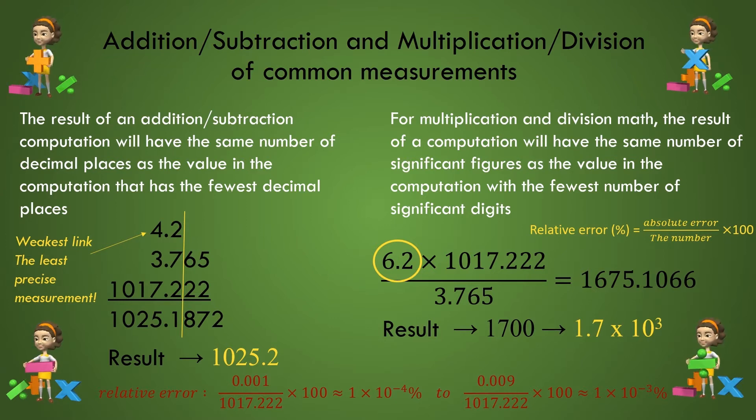Now if we do this kind of analysis for each of the values in the computation, for 3.765, we would obtain a relative error greater than that for our 1017.222 value, but less than the 6.2 value. Now go ahead and prove that to yourself.